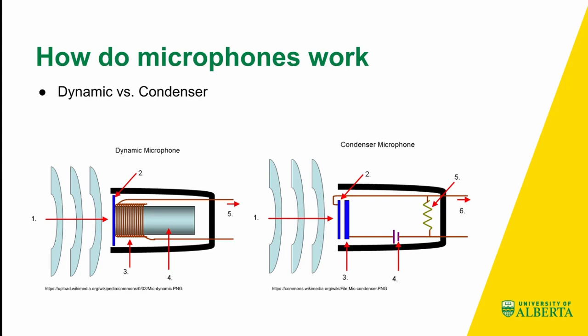In a condenser microphone, a similar process happens, except in addition to the diaphragm, there's another backplate — labeled number three. Instead of a coil wrapped around a magnet, this is all powered through basic electricity. Basically, the backplate moves closer and further away from the diaphragm, and then that movement is transferred and becomes a digital signal, similar to a dynamic microphone.